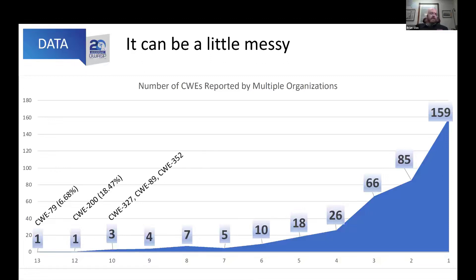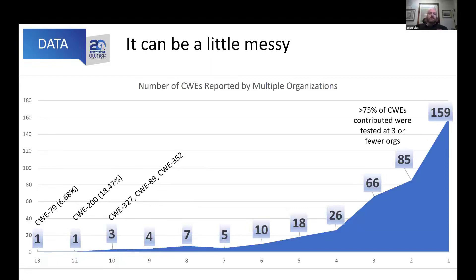For three organizations, the commonly tested CWEs were CWE-327 (use of broken or risky cryptographic algorithm), CWE-89 (SQL injection), and CWE-352 (CSRF). The other really interesting challenge: of almost 400 CWEs contributed, over 75% of them were only tested for at 3 or fewer organizations. This tells me that as an industry, we have not standardized on what we call our test cases or what CWEs we map our tests to, which makes data collection quite an interesting challenge when we try to correlate all these different types of test results.